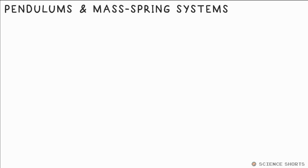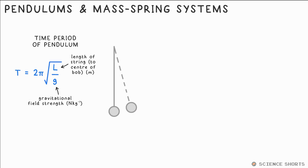We have two equations for the time period of a pendulum and mass on a spring. For a pendulum, T equals 2π root L over g, where L is the length of the string, to be precise from the pivot to the centre of the bob, and g is gravitational field strength. Note that there is no mass in this. It doesn't affect the time period, or therefore the frequency either.